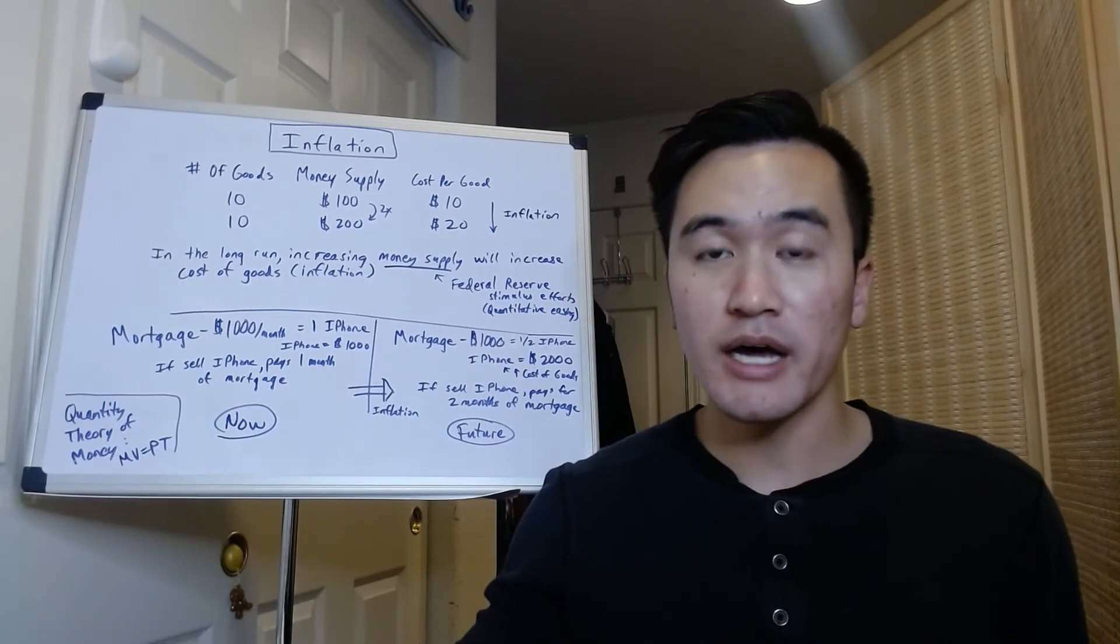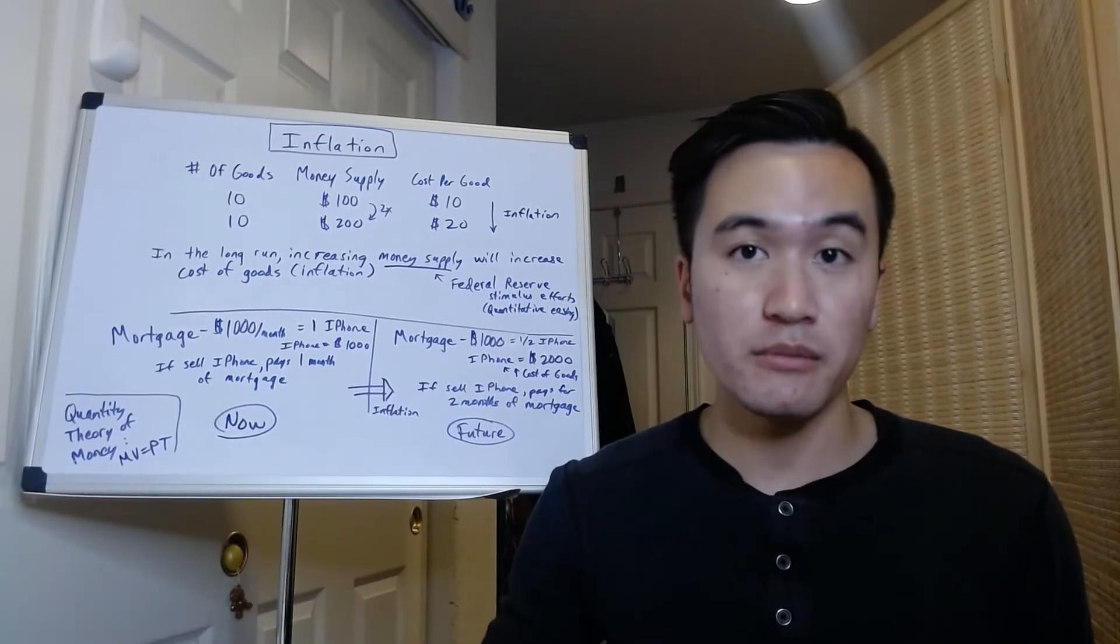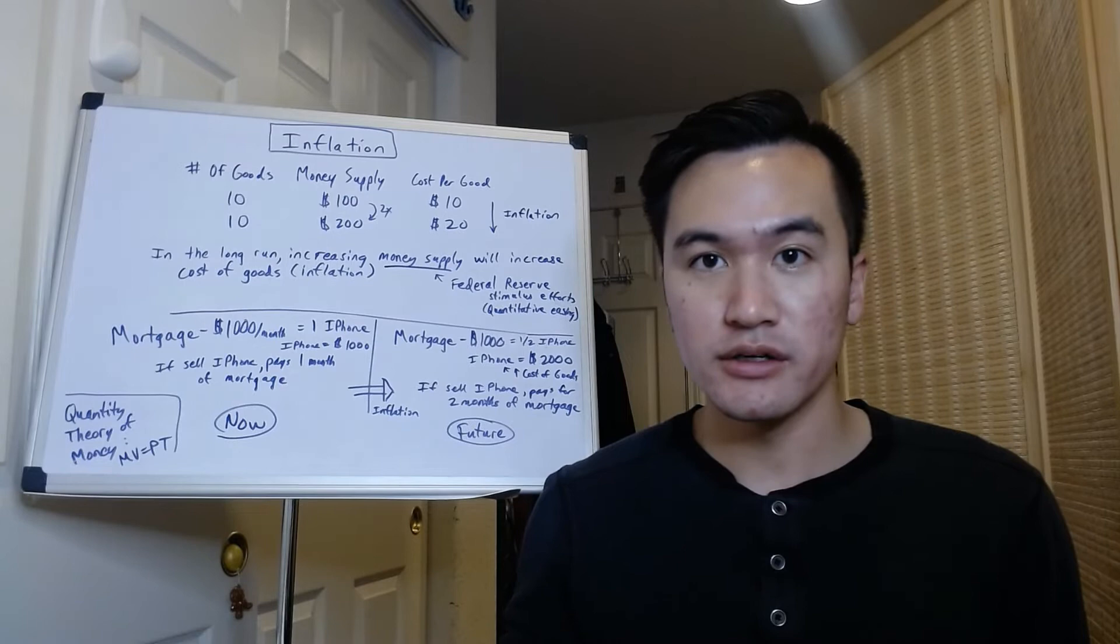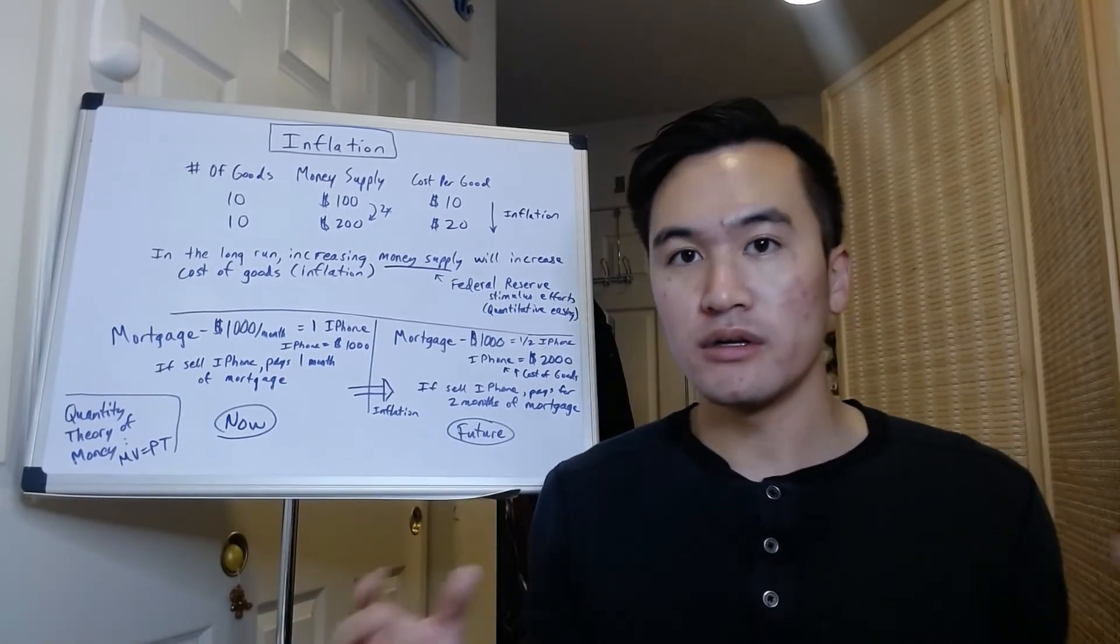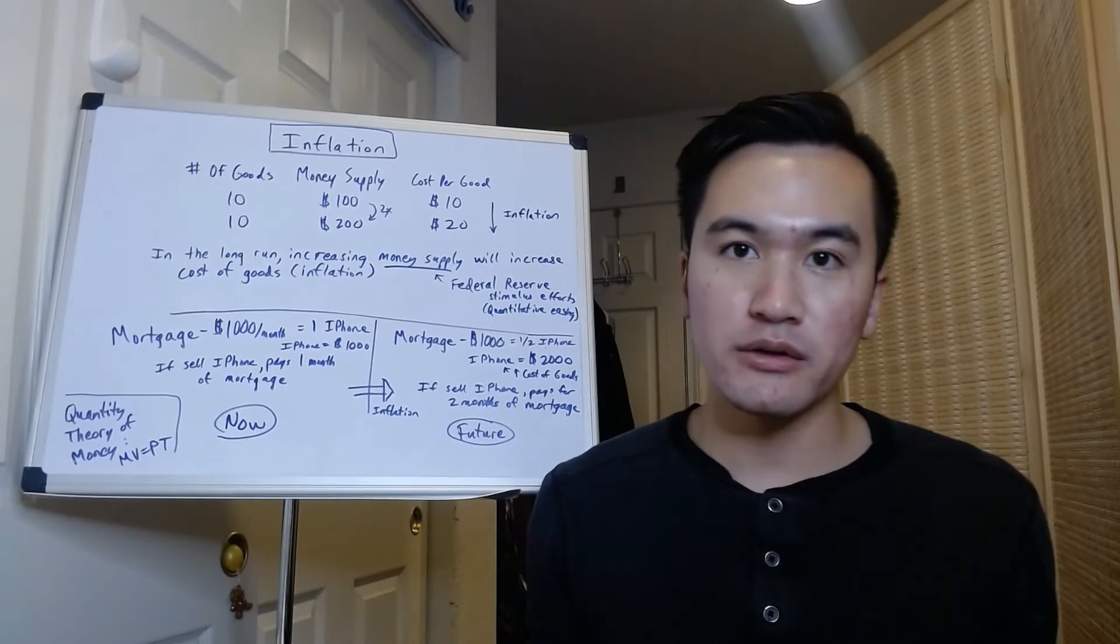I basically divided the money supply, $100, by the number of goods, which is 10 goods, to get the cost per good, which was $10 per good. So doubling the money supply will double the cost per good, and that's called inflation.